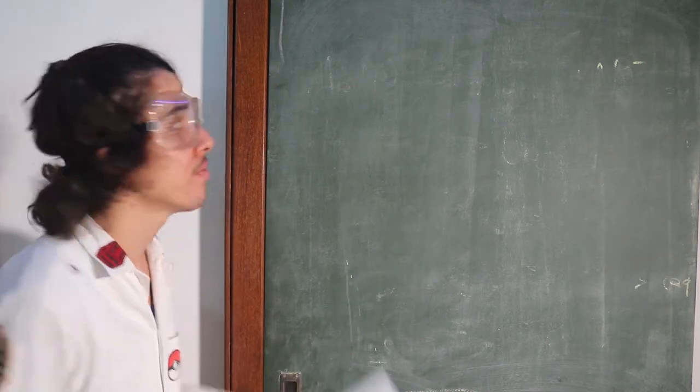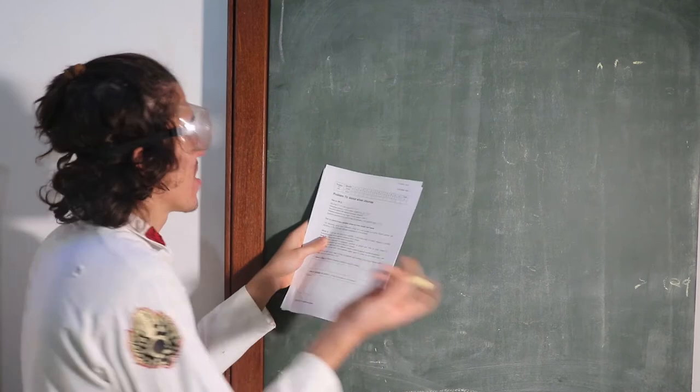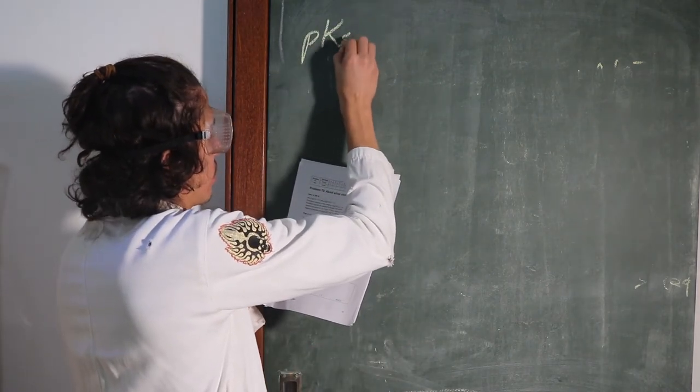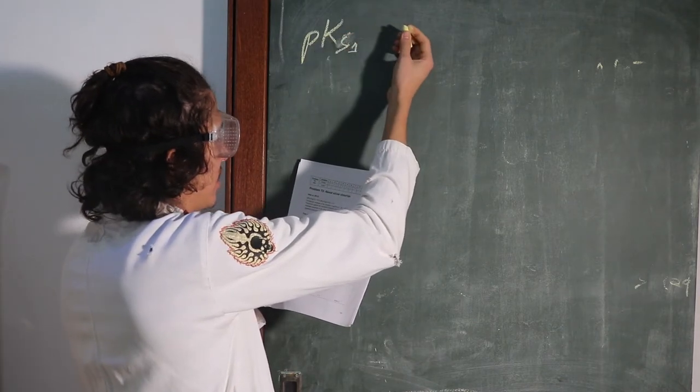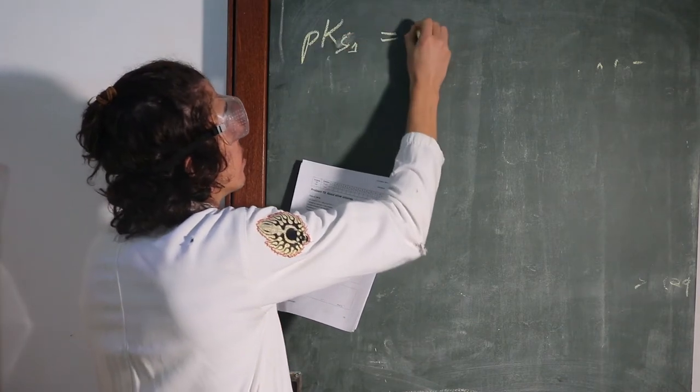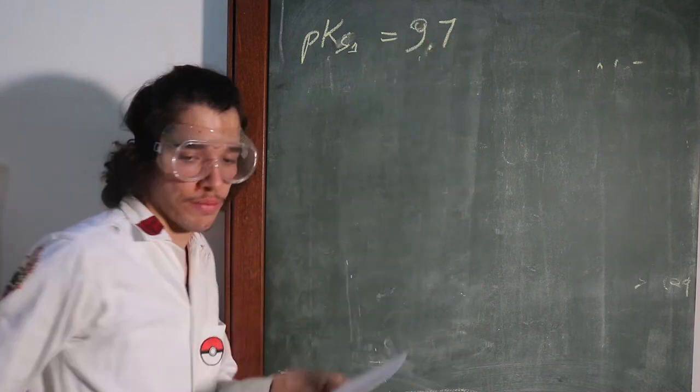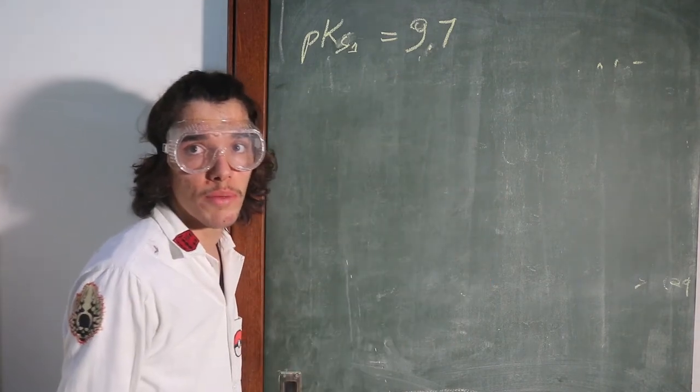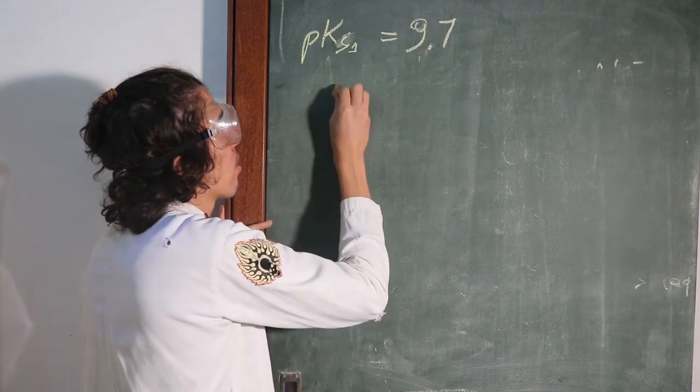So okay, we should look to the data here first. So pKs1 from AgCl, it's gonna be 9.7. And it's all we need to solve this problem. So what is this Ks? It's gonna be the constant of equilibria.